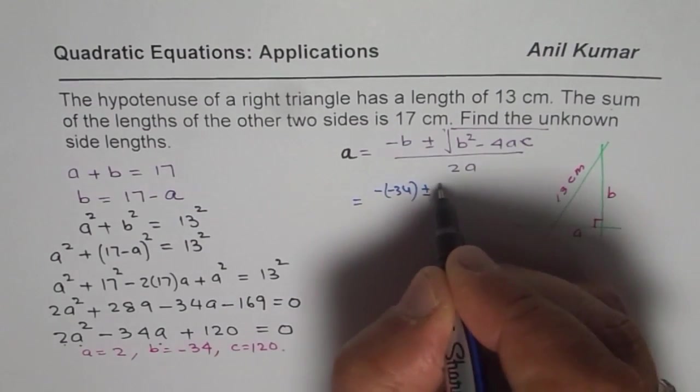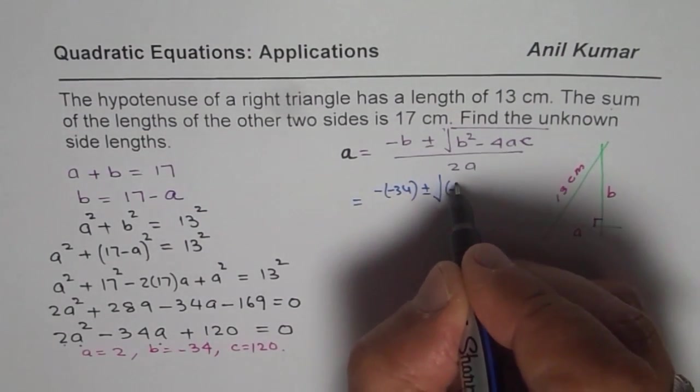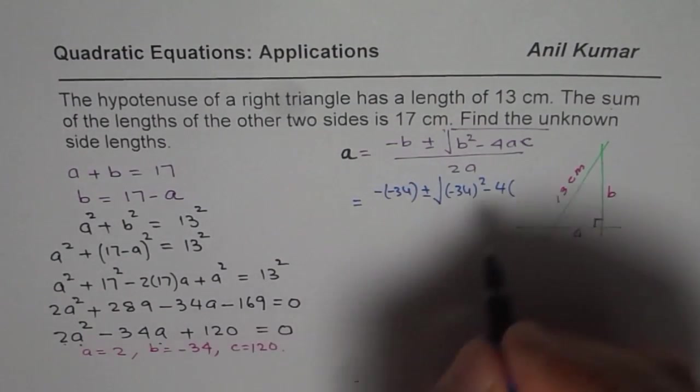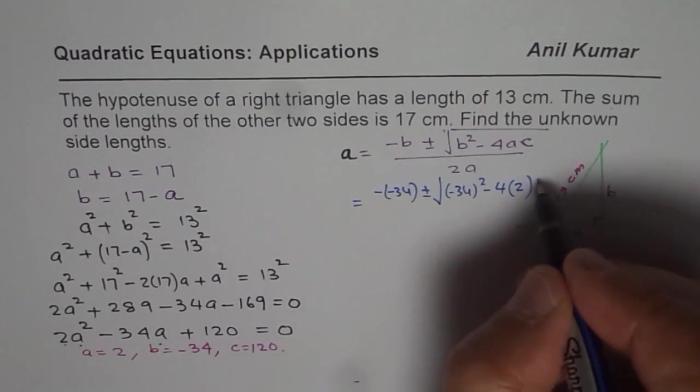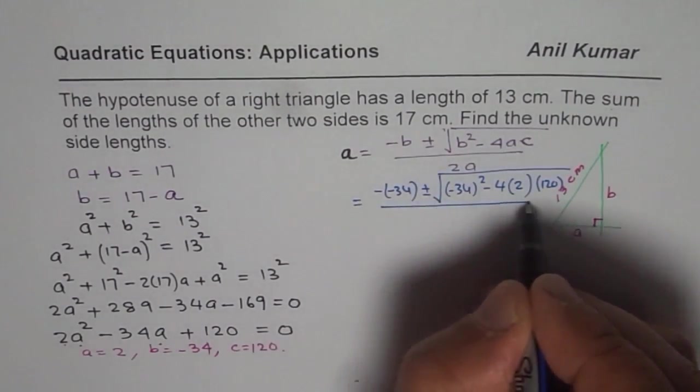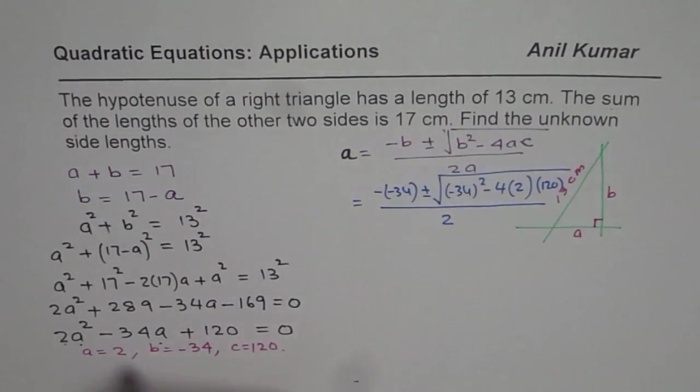Let me write like this first. Square root of minus 34 squared minus 4 times A is 2 and C is 120. Square root divided by 2 times A, which is 2.